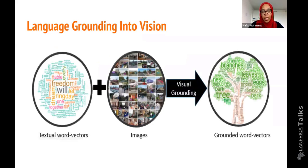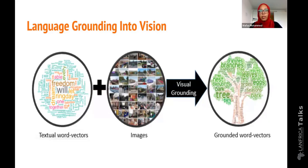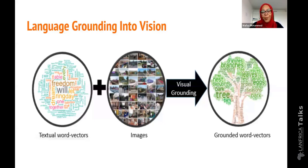The definition of language grounding in general is basically linking textual representations to the physical world that we live in. From a cognitive science point of view, cognitive scientists believe that we perceive the world and we perceive language through all our senses. So to achieve human-like language understanding, we need to make use of all of our senses. As a first step in this direction, I'm making use of vision to enrich textual representations. The idea is very simple: if you have textual representations — word vectors — you combine images to those vectors, and then you get grounded word representations. This is the overall goal of grounding.